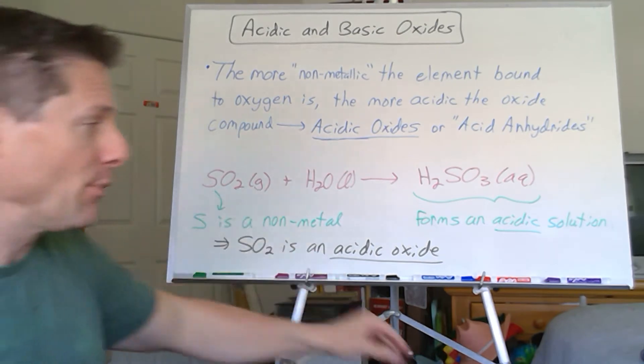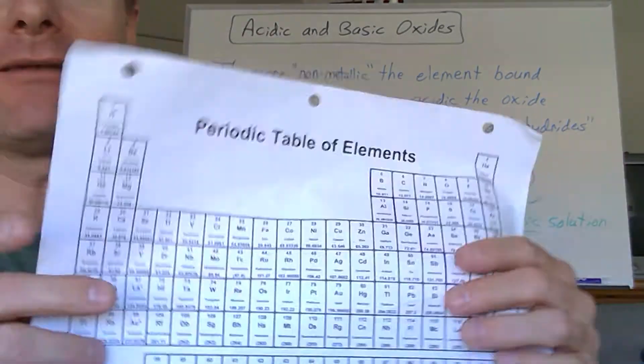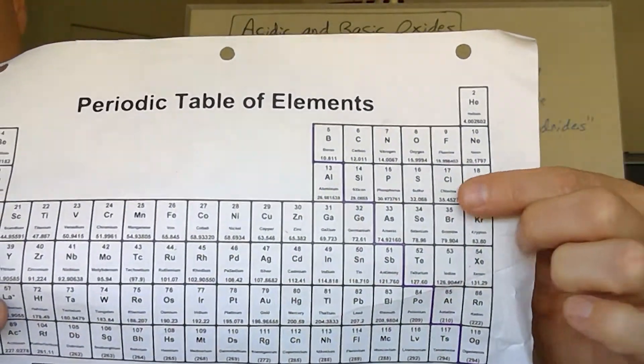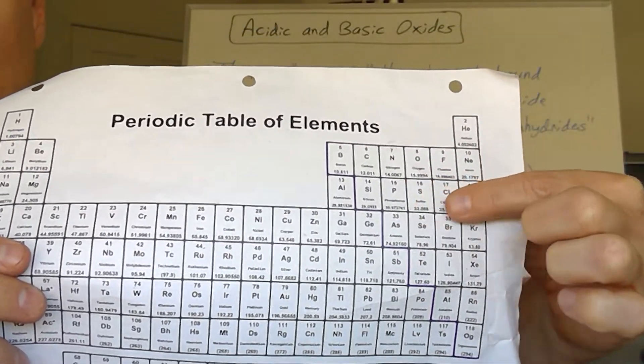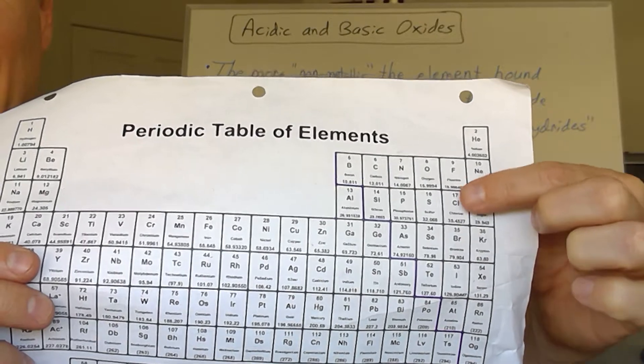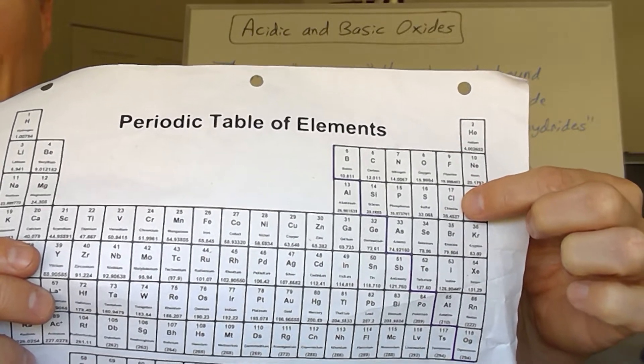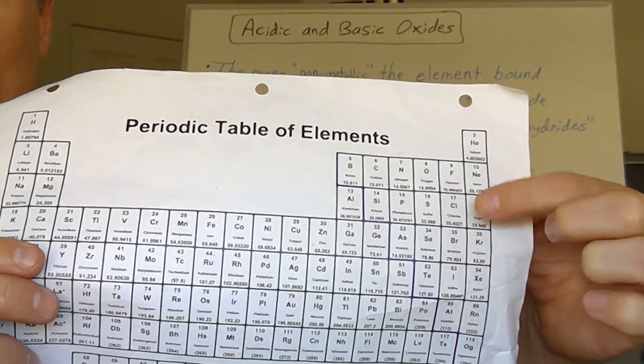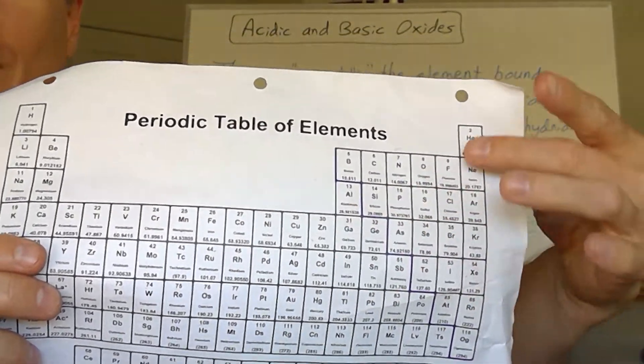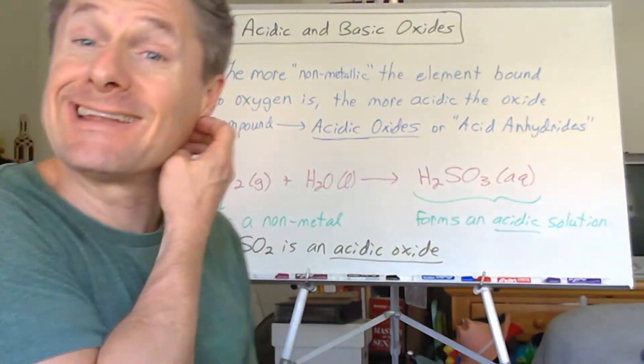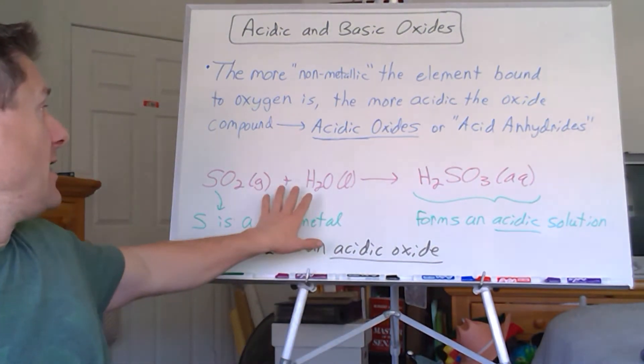So let's take, for example, sulfur dioxide. So we know sulfur is way over here. We know these are all non-metals. And the more non-metallic, I would expect, you know, chlorine, a chlorine oxide compound to be more acidic than a sulfur oxide compound. Take out the noble gases, right? But the further over, the more non-metallic you get, the more acidic oxides we would predict.